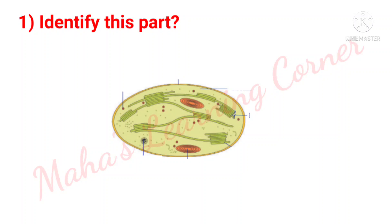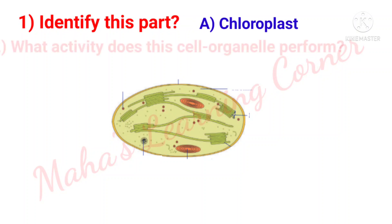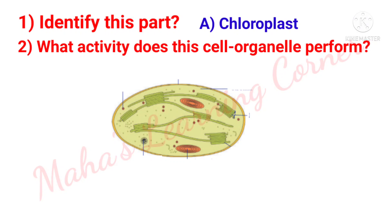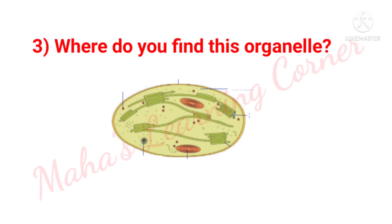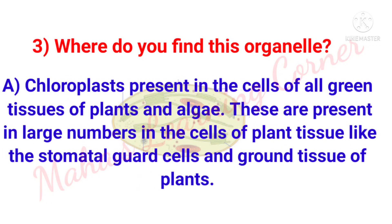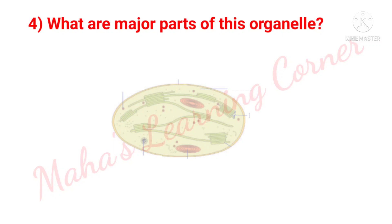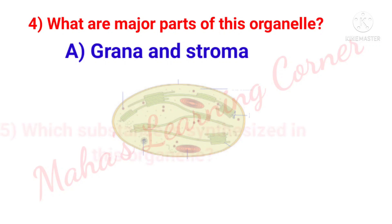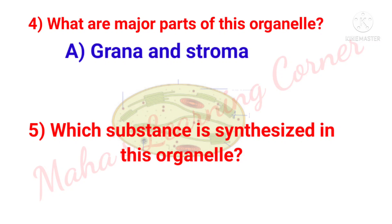Identify this part. Answer: Chloroplast. What activity does this cell organelle perform? Answer: Photosynthesis. Where do you find this organelle? Chloroplast is present in the cells of all green tissues of plants and algae, in large numbers in cells like stomatal guard cells and ground tissue of plants. What are the major parts of this organelle? Answer: Grana and stroma. Which substance is synthesized in this organelle? Answer: Glucose.